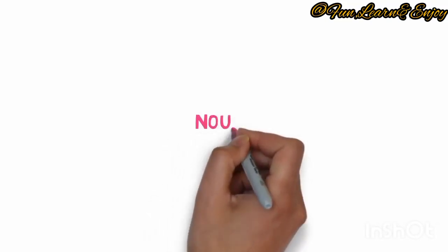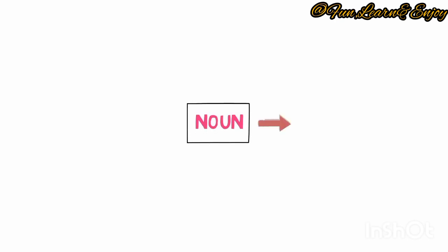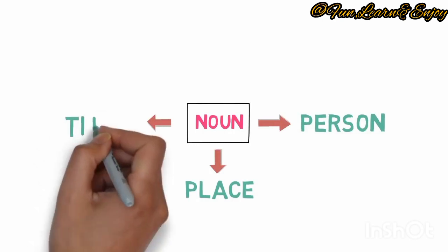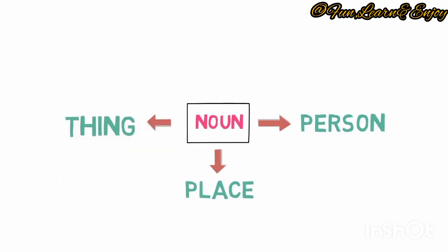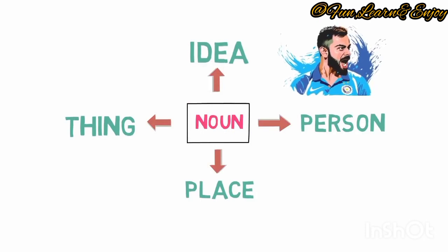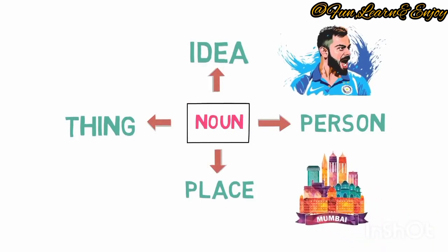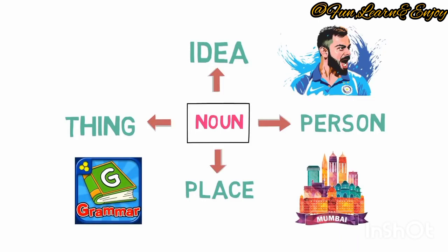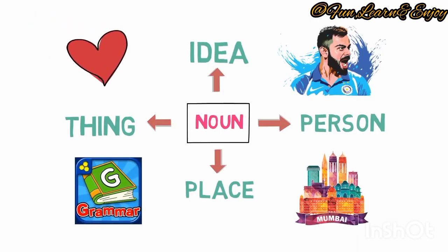Let's start first with noun. What is a noun? A noun is a word used as the name of a person, place, thing or an idea. Person like Virat Kohli, place like Mumbai, thing like a grammar book, idea like love. These all are examples of nouns.